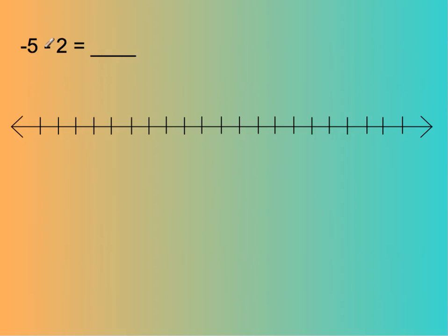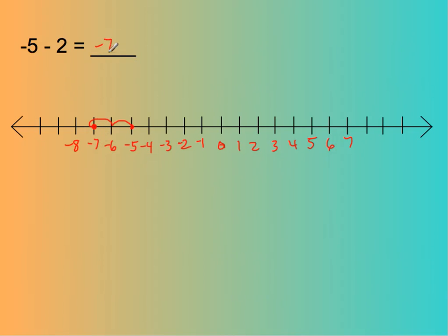Start at negative 5 and go to the left for 2. Let's draw that on the number line. We're starting at negative 5 and going to the left 2 spaces: 1, 2. That puts us at negative 7. I hope you're starting to see the intuitiveness of what these problems are actually asking you to do.